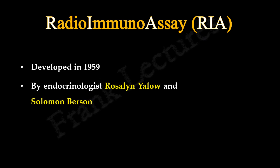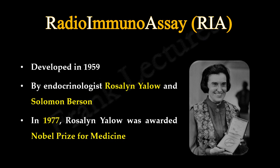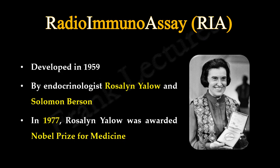Radioimmunoassay was developed in 1959 by endocrinologist Rosalyn Yalow and Solomon Berson, to measure the circulating levels of the important hormone insulin. In 1977, Rosalyn Yalow was awarded the Nobel Prize for Medicine for the development of radioimmunoassay for peptide hormones. Solomon Berson could not share the award because of his untimely death in 1972.